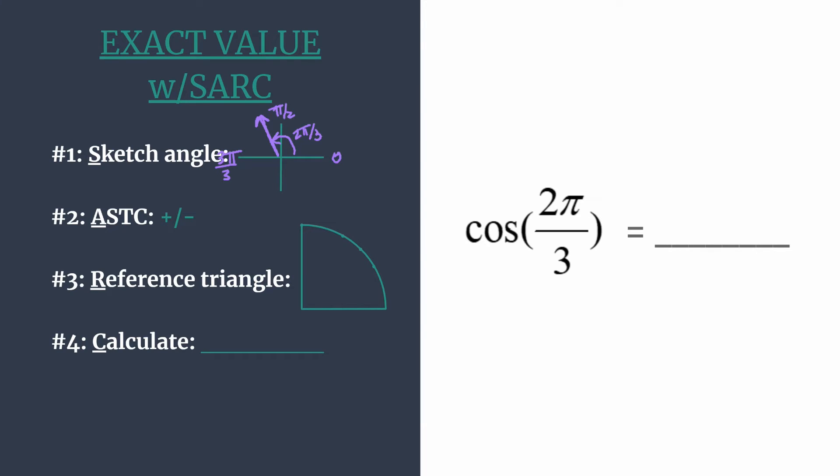We can move to step 2, where we decide: is our final answer, our exact value, going to be positive or negative? And we simply use the acronym ASTC—all students take classes—to determine if our sign should be positive or negative.